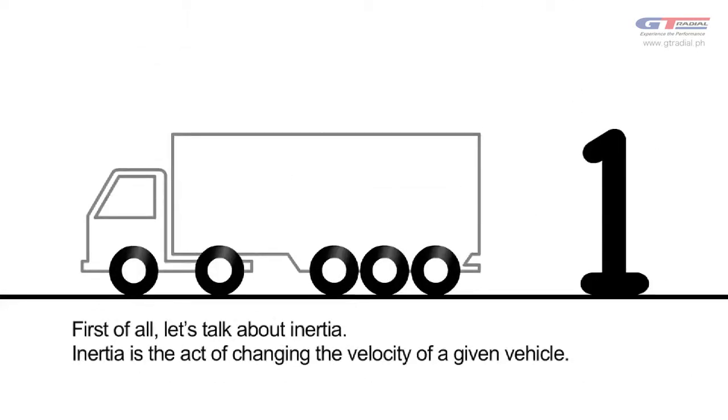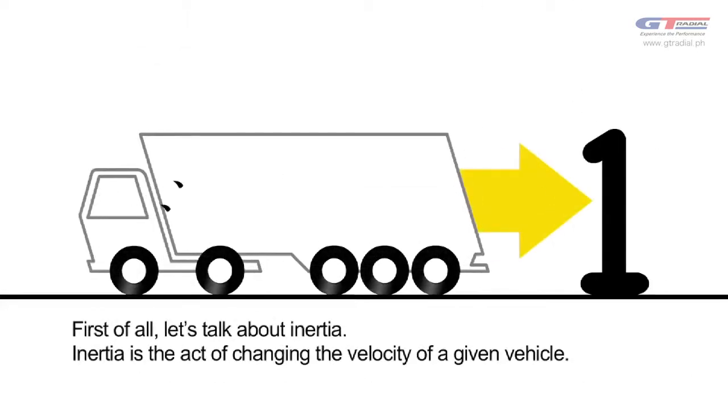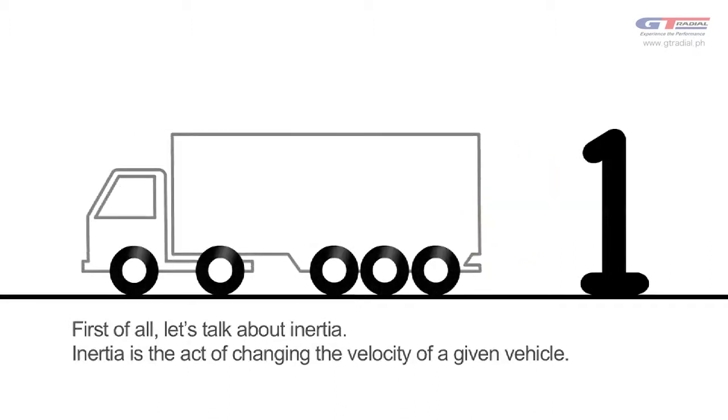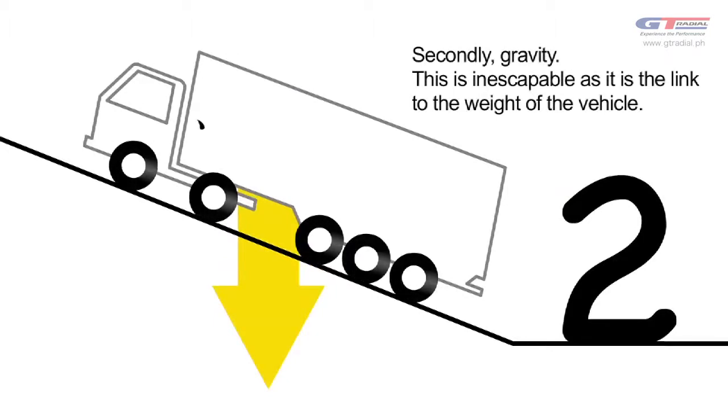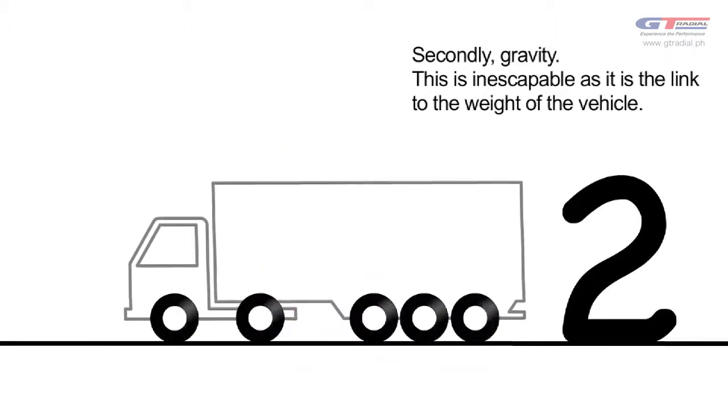First of all, let's talk about inertia. Inertia is the act of changing the velocity of a given vehicle. Secondly, gravity. This is inescapable, as it is the link to the weight of the vehicle.